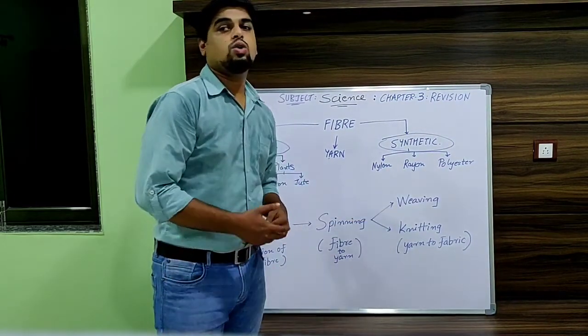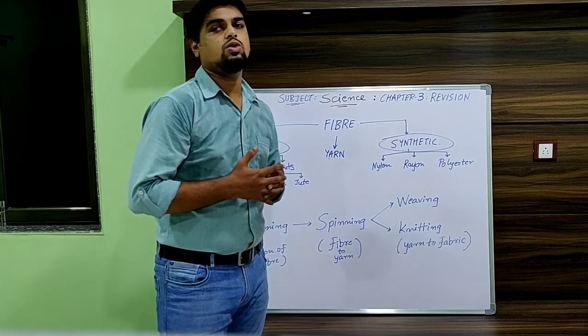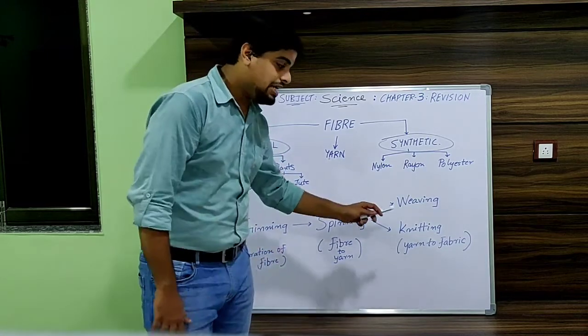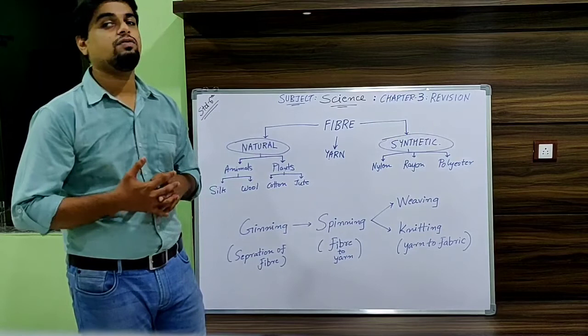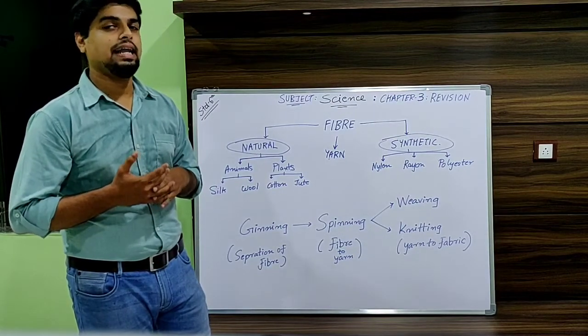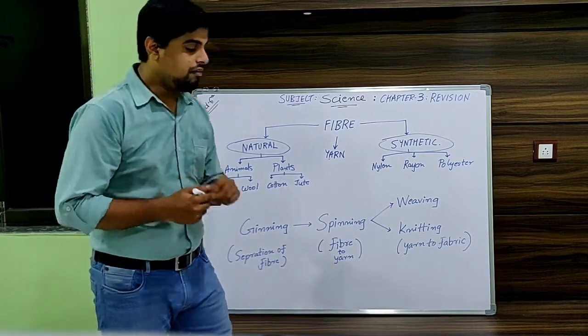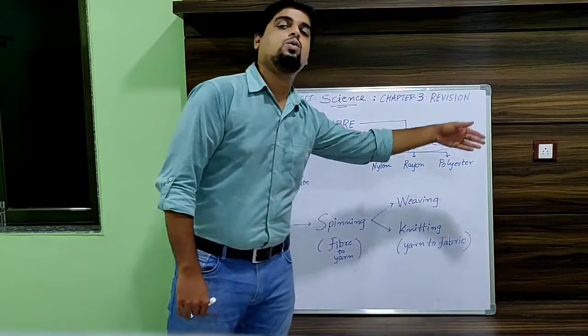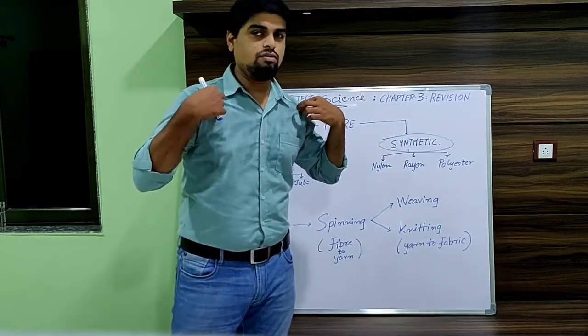In the process of weaving, two sets of yarns are used to make fabric. While in the process of knitting, only one set of yarn is used to make entire fabric. After converting into fabric, it is converted into clothes which we wear.